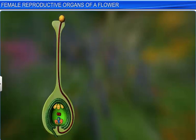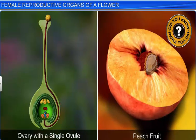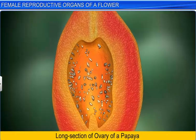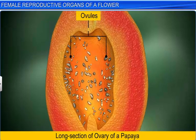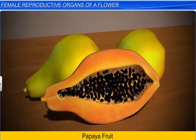Moreover, after fertilization, the ovules form seeds while the ovary develops into a fruit. Different flowers of different plant species have a varying number of ovules in their ovaries. A peach, for instance, develops from an ovary containing a solitary ovule. A papaya, on the other hand, has several ovules in its ovary, and that's why you see numerous seeds in the fruit when it is split open.